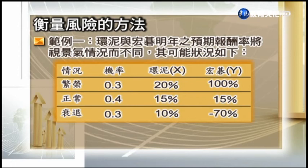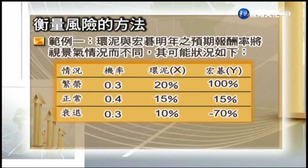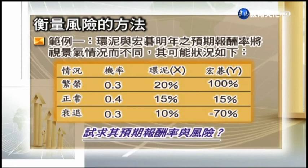環球水泥跟宏碁明年的報酬率會跟未來景氣情況而不同。如果景氣環榮，機率有30%，環球水泥報酬率可達20%，宏碁達100%。如果景氣跟今年差不多，有40%的可能，環球水泥可獲得15%，宏碁也是15%。如果景氣衰退，有30%的機率，環球水泥有4%報酬，因為水泥是民生必需品影響不大；對宏碁來講景氣不好，報酬率降到-70%。